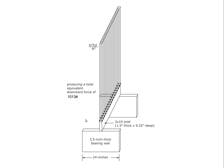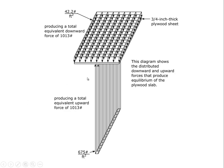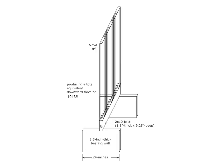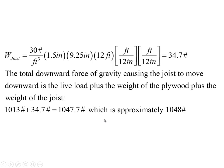By action-reaction pairs, if the joist top is pressing up on the bottom of the plywood with 675 psf, then the plywood is pressing down on the top of the joist with that same 675 psf. We were drawing upward arrows on the bottom of the plywood representing the joist's influence; by Newton's third law, the plywood presses down on the top of the joist with the same pressure. At some point we would convert to pounds per square inch, but we're keeping pounds per square foot for consistent relative comparisons. This produces a downward force of 1013 pounds on the top of the joist.